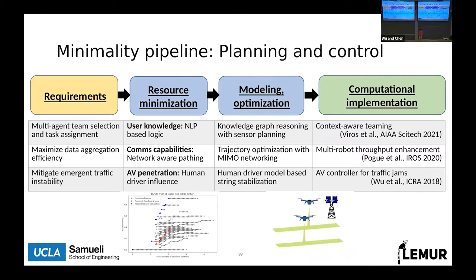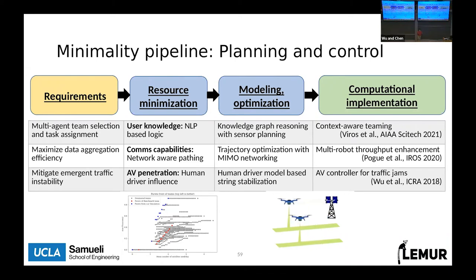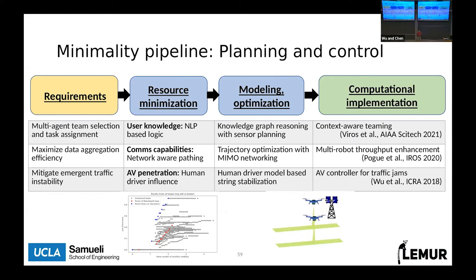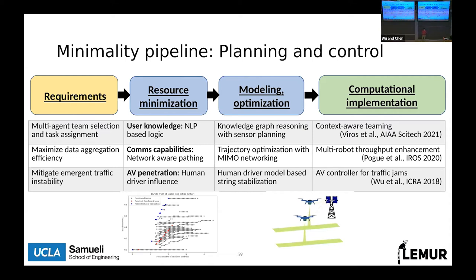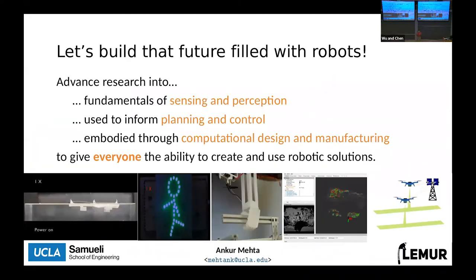When we talk about minimizing resources, sometimes they are engineering-driven — bandwidth, RF hardware, cost of electronics, sensor capabilities. But we can also talk about resources in terms of understanding and expertise — the engineering background necessary to make use of these things, not just design them. How do we use computational tools to minimize that requirement? We get some neat solutions for that as well, and all of this comes together into the core problem we started with.